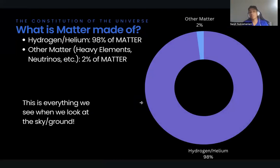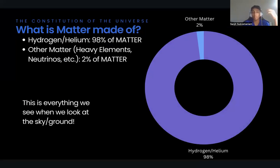Out of all the 4% of matter, 98% of that matter is going to be hydrogen and helium. This is because most of the stars are mostly made up of these elements. Some other matter makes up 2%, like heavy elements and neutrinos.